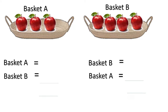Let's put these two together and find out the total number of apples. In basket A there are three apples, and in basket B we have four apples. So how much is three plus four, children? It is seven.